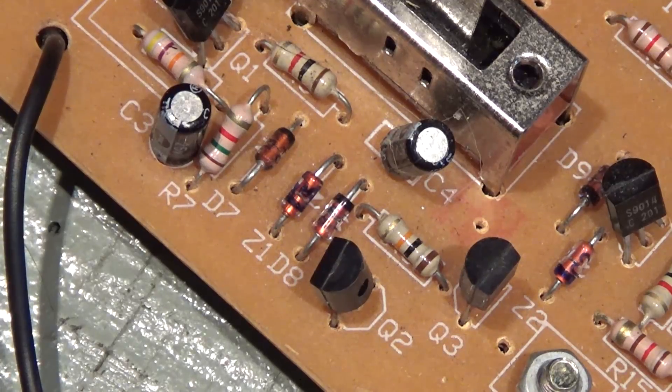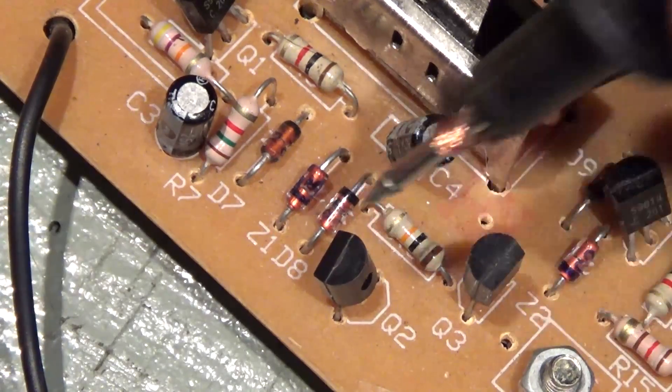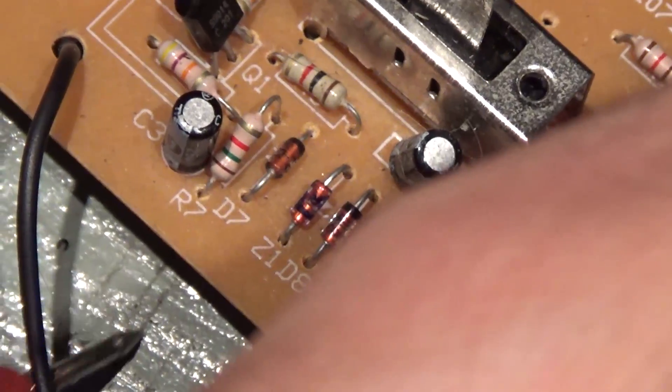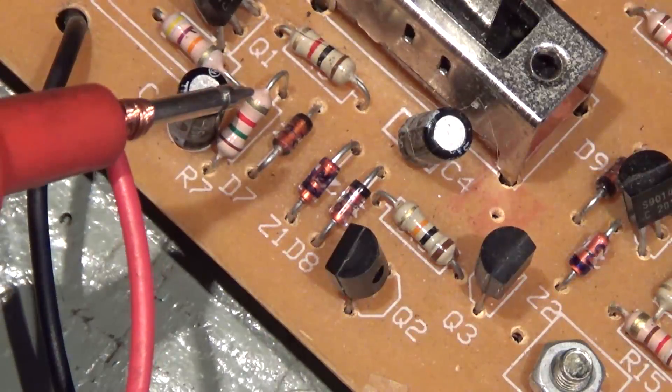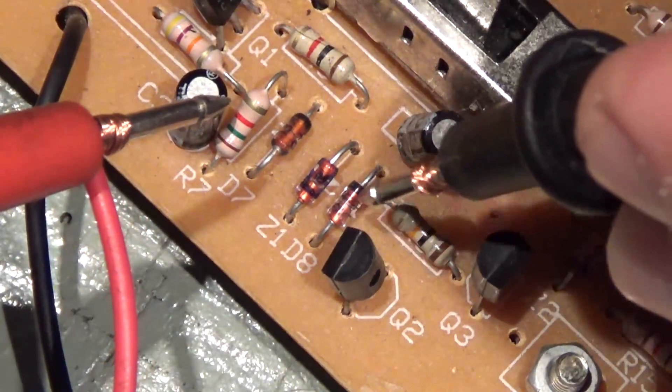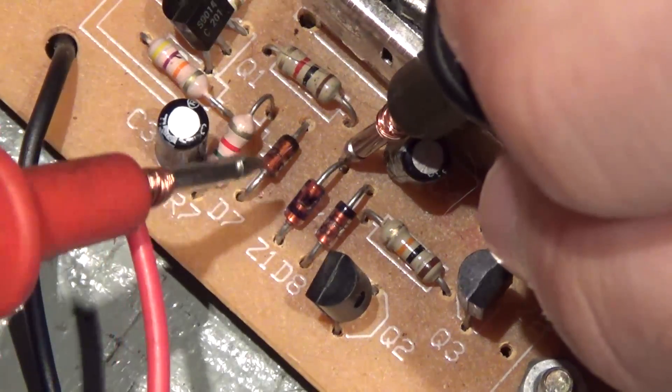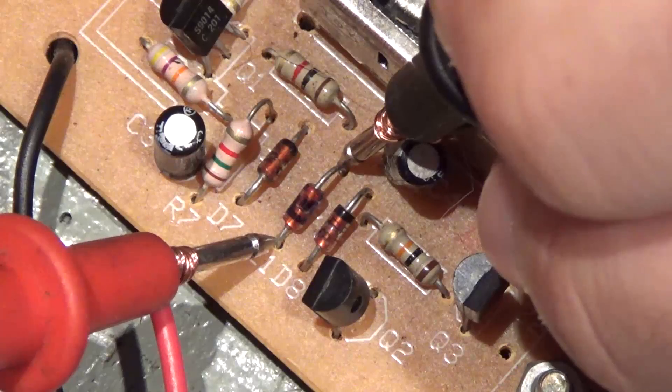So right now what I'll do is simply, I'll hold it like this. For example, black on the negative and red on the positive.